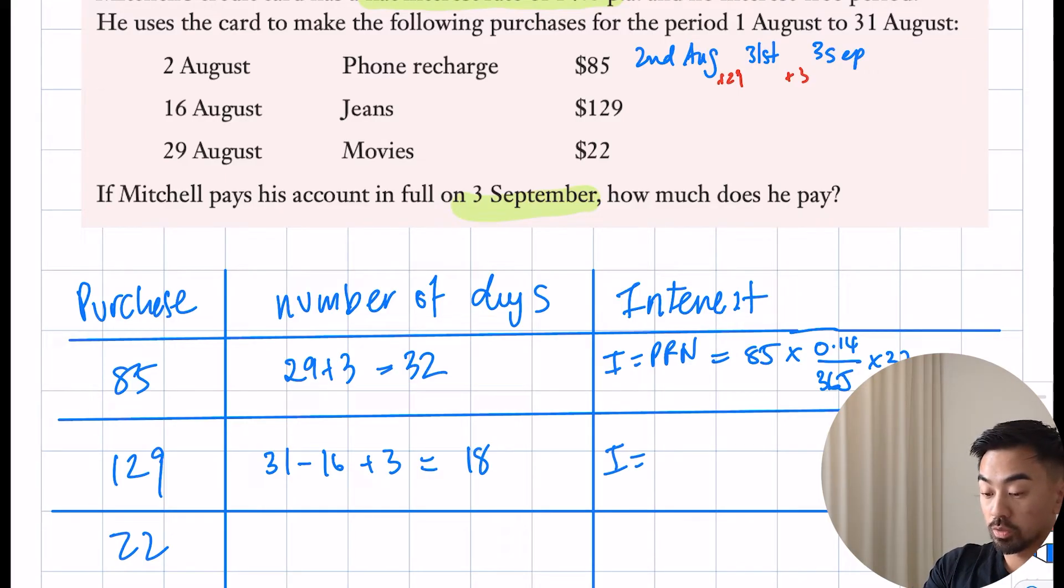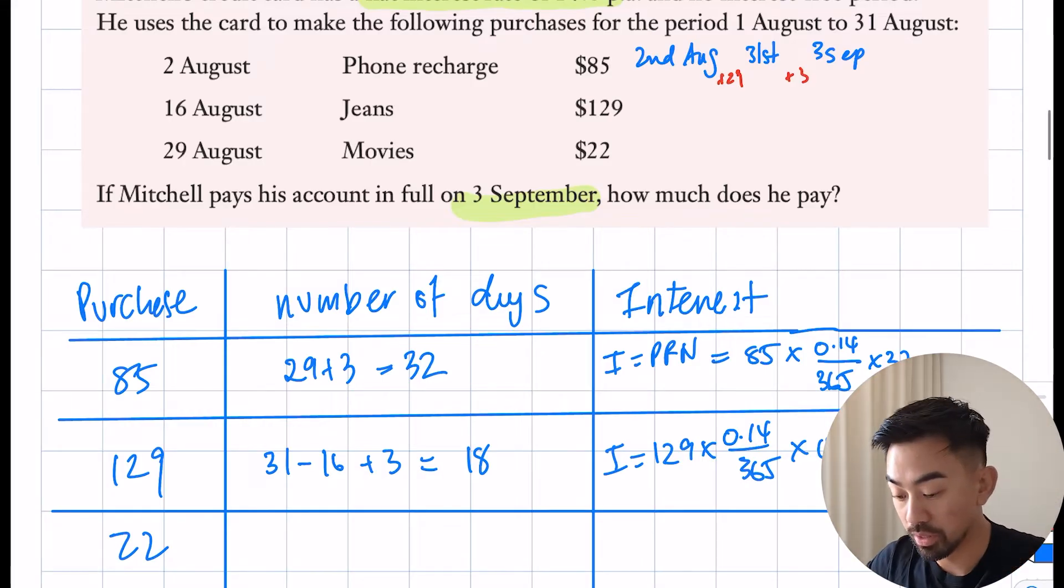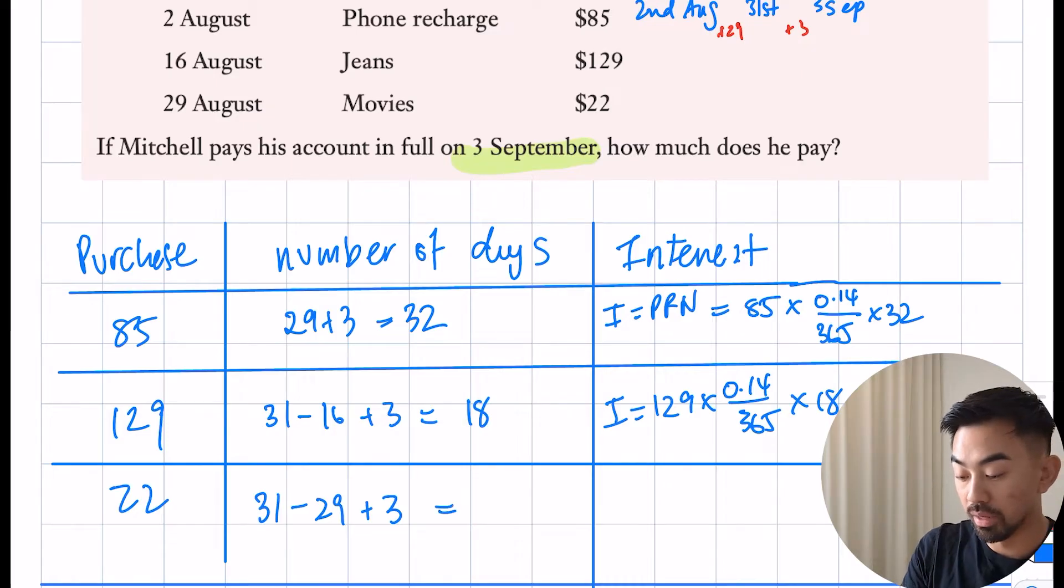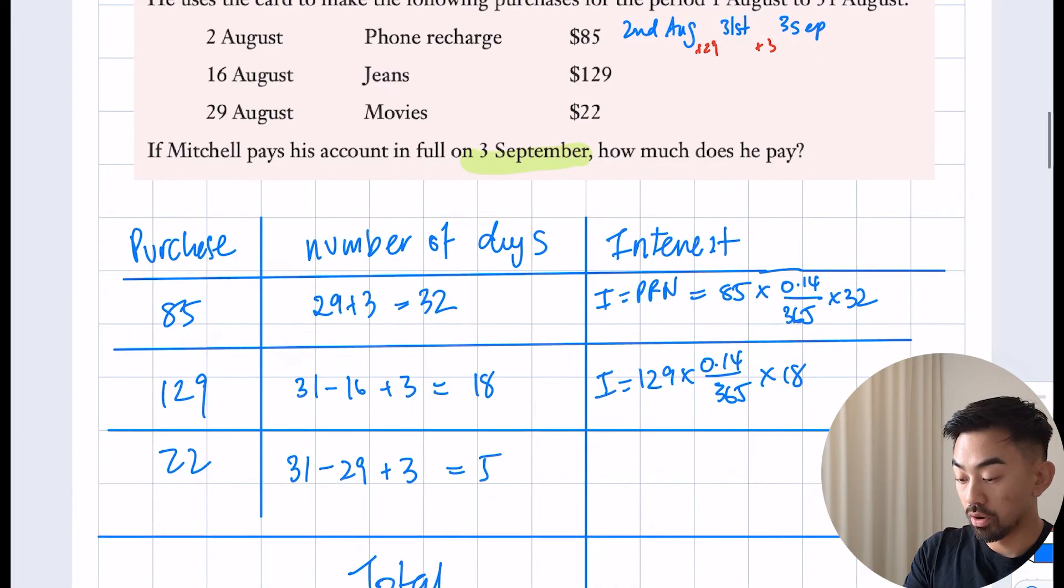So I'll work out my interest payments: 129 times 0.14 over 365 times 18. Last one: movies, 29th of August till 3rd of September. I'm going to do 31 minus 29 plus 3, and I think that's going to be 5 days. So I = P, so 22 times 0.14 over 365 times 5. There are all my interest payments.